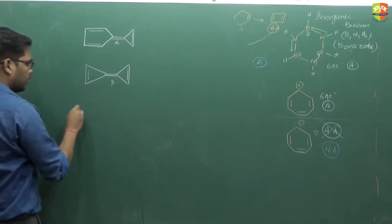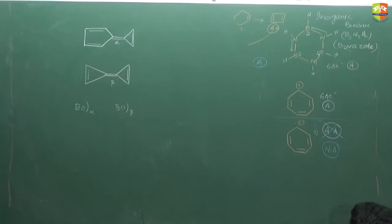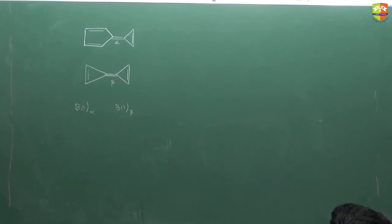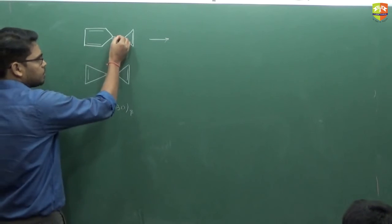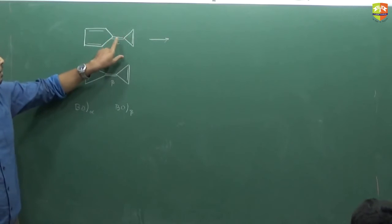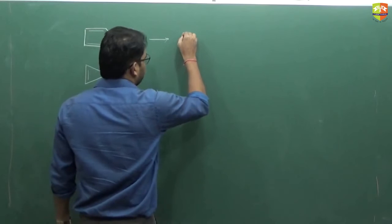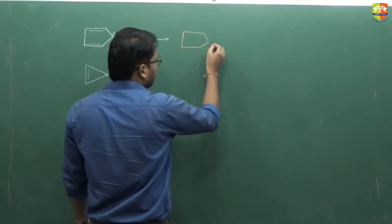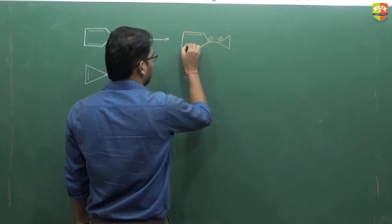This bond is alpha and this bond is beta. We have to compare the bond order of alpha and the bond order of beta, and then bond length also. In this compound we can shift this pi electron either onto this ring or onto this ring, because both are in conjugation — pi sigma pi, pi sigma pi. So we can shift both ways.